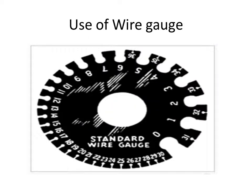A wire gauge is used to measure the size of a wire. It has notches of different sizes numbered from 0 to 36. To find the size, take the wire and insert it into a notch of a trial size.